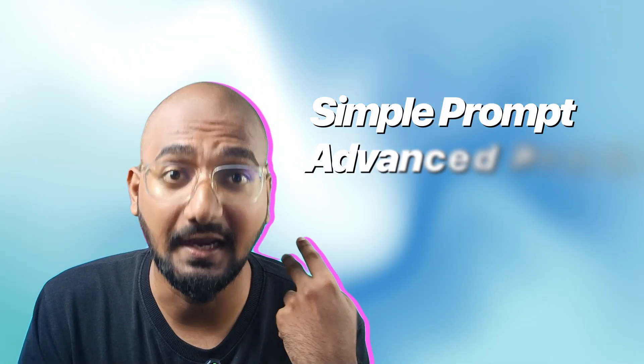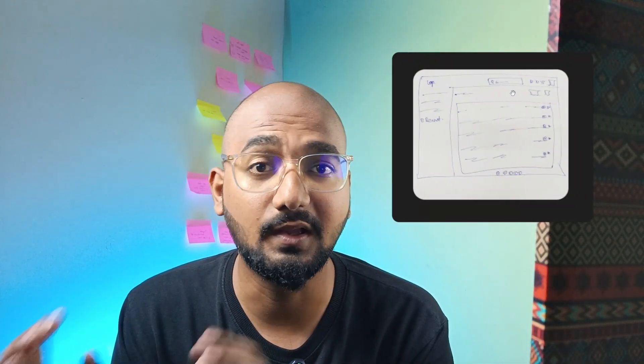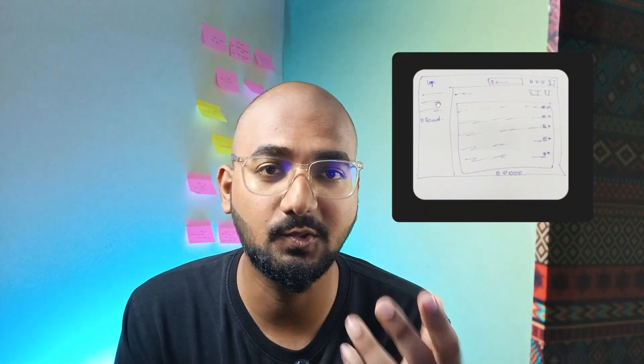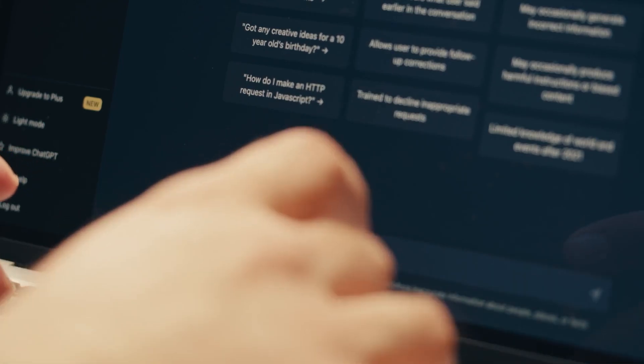We've got a simple prompt. We've got an advanced prompt. With a low-fidelity wireframe, we've got an image and a prompt — we've got an output. If it's the advanced level plus low fidelity, it's good. If we've got an image and a prompt, we've got an output.